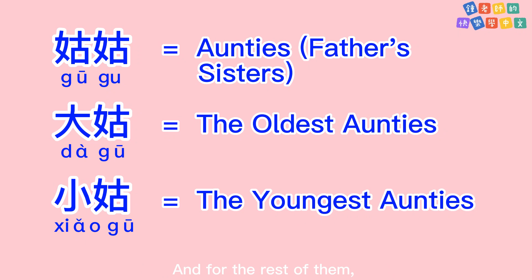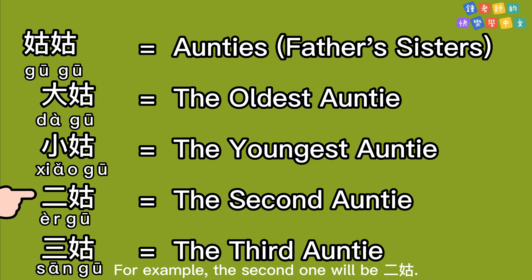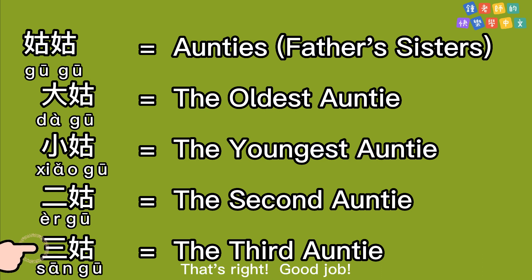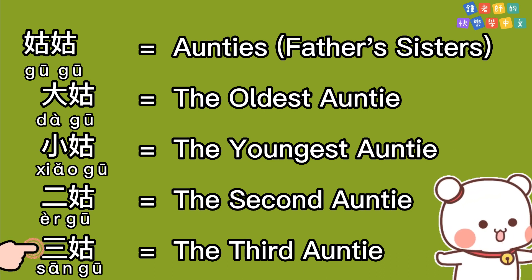And for the rest of them, we can just count them by numbers. The second one will be 二姑, the third one — 三姑. 三姑. That's right! Good job! 三姑.